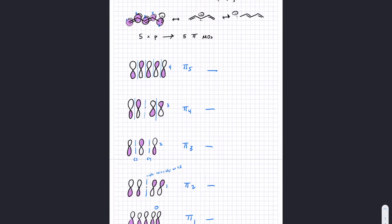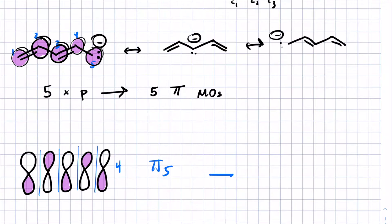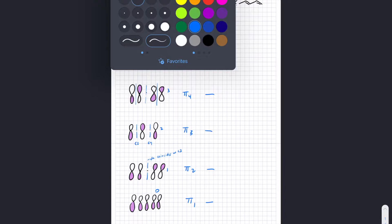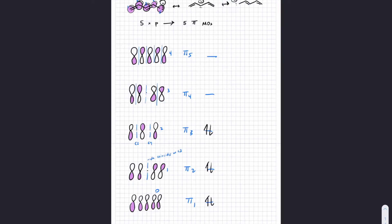At this stage, we count the number of electrons involved in this system of pi orbitals — the pi electrons — which are any electrons participating in resonance. Resonance can happen when you have pi bonds adjacent to each other and/or lone pairs adjacent to pi bonds and/or positive charges adjacent to pi bonds. In this case, we've got two, four, six electrons. We fill the orbitals up from bottom to top, run out of electrons, and conclude that pi three is the HOMO and pi four is the LUMO.